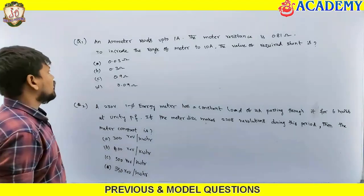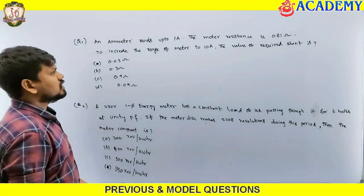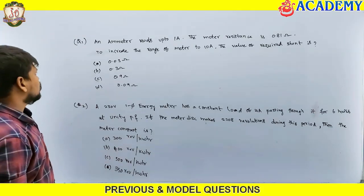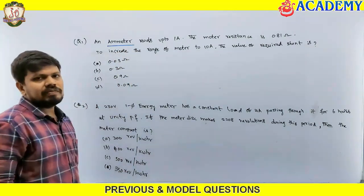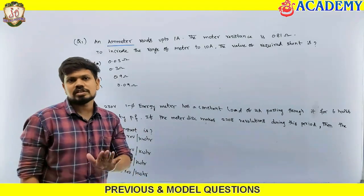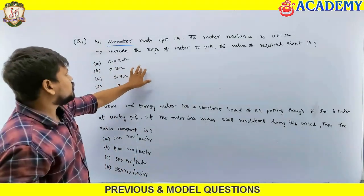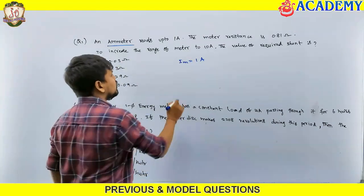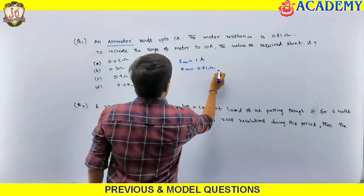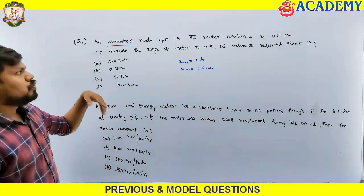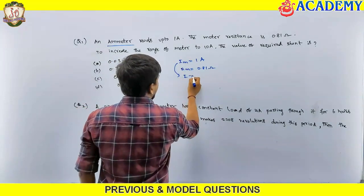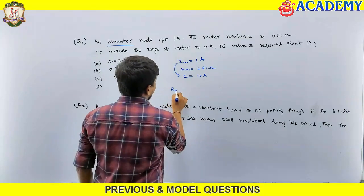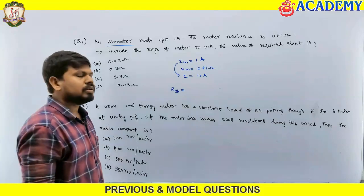See the first question: an ammeter reads up to 1 ampere, the meter resistance is 0.81 ohms. To increase the range of the meter to 10 amperes, find the value of the required shunt. They have not given whether it is PMMC or moving iron, so we just consider it as PMMC. The meter current IM is 1 ampere and RM equals 0.81 ohms.